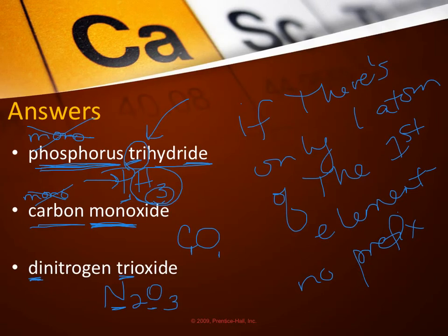If there's a metal in the formula, you need to follow all of the ionic rules. If there's not a metal, you follow all of the covalent rules.